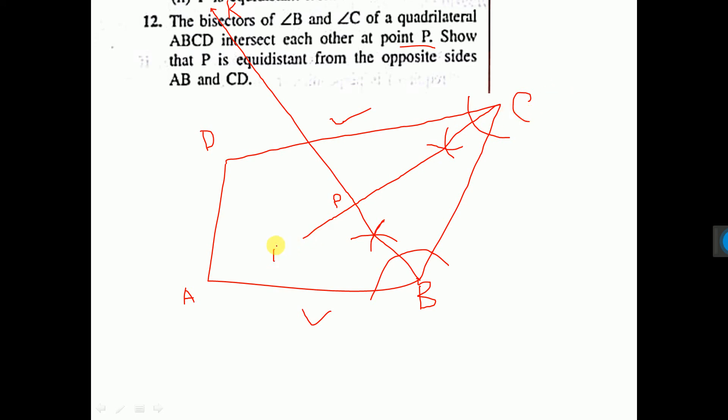CM is the bisector. This point is M. CM is the bisector of angle BCD. Therefore, any point of CM is equidistant from BC and CD.